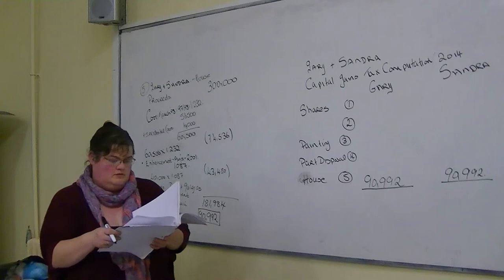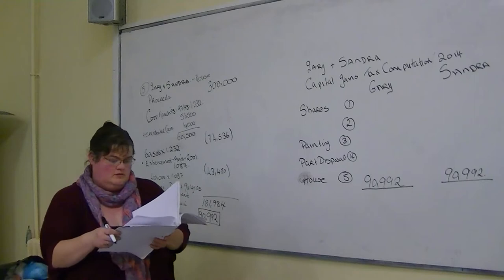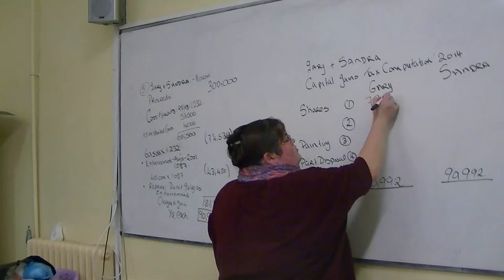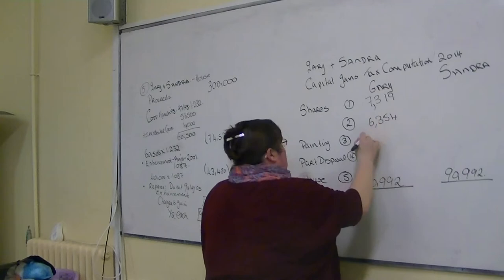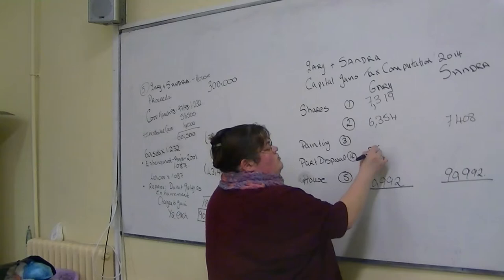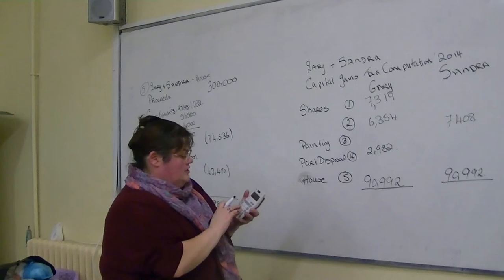We'll do that computation in 2014. Gary and Sandra. Gary: shares number one 7,319, shares number two 6,354, painting 7,408, part disposal 2,982, and the house 90,992. Sandra also gets 90,992 for the house.